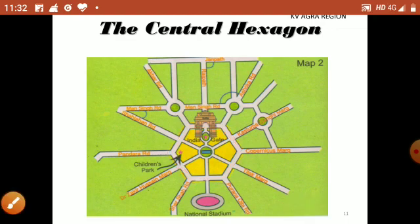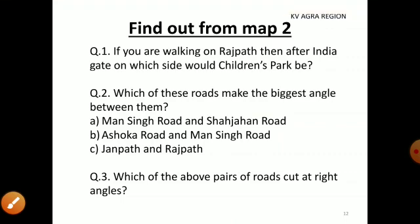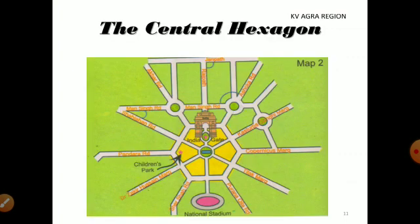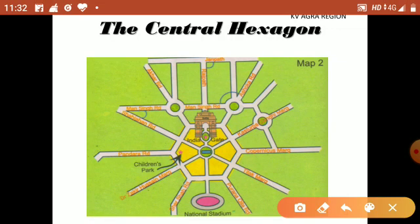Let us start with our questions. If you are walking on Rajpath, then after India Gate, on which side would Children Park be? Let's see the map. Here is India Gate, and you can trace Children Park here. So, Children Park is to the right side of India Gate.